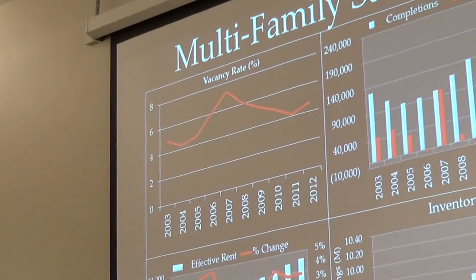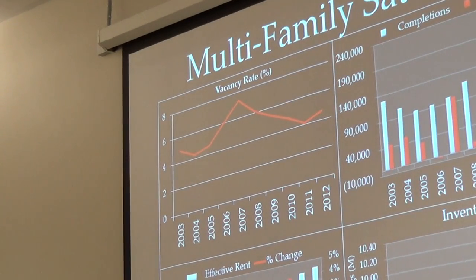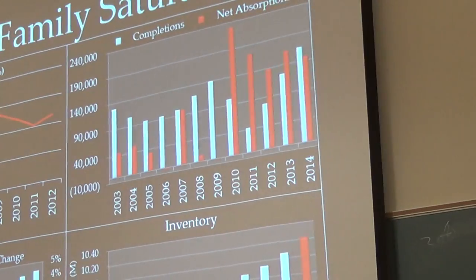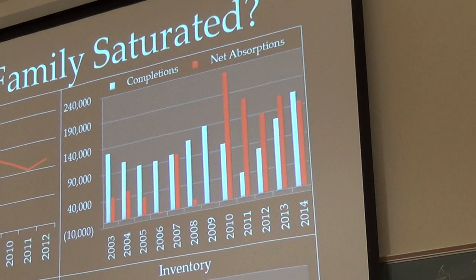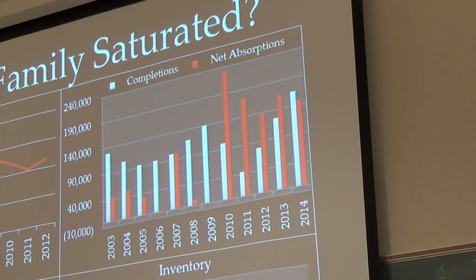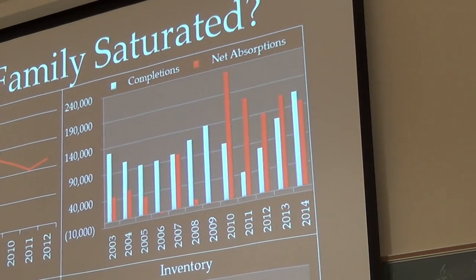Multi-family refers to apartment complexes, condos, that kind of stuff. In the next chart you see completions — construction completions — and net absorption, which is people leaving and coming in. This is a forecast pulled from the real estate investment database. In 2013 and 2014, net absorptions are forecasted to trend below completions, which is another factor we would consider as being oversaturated.